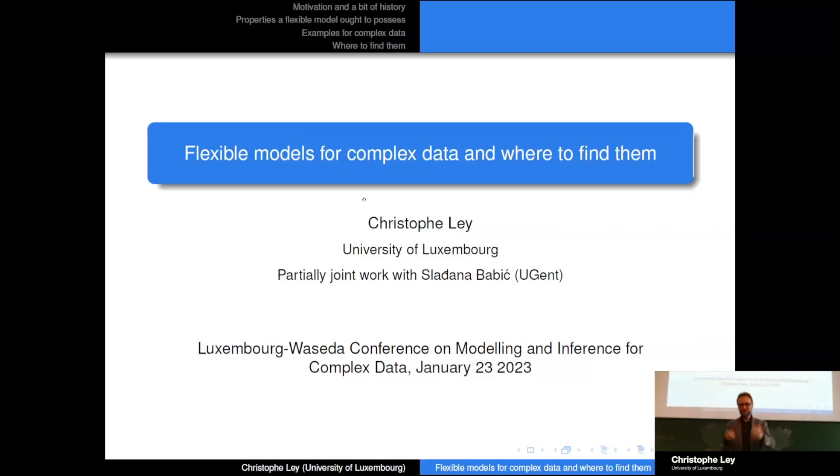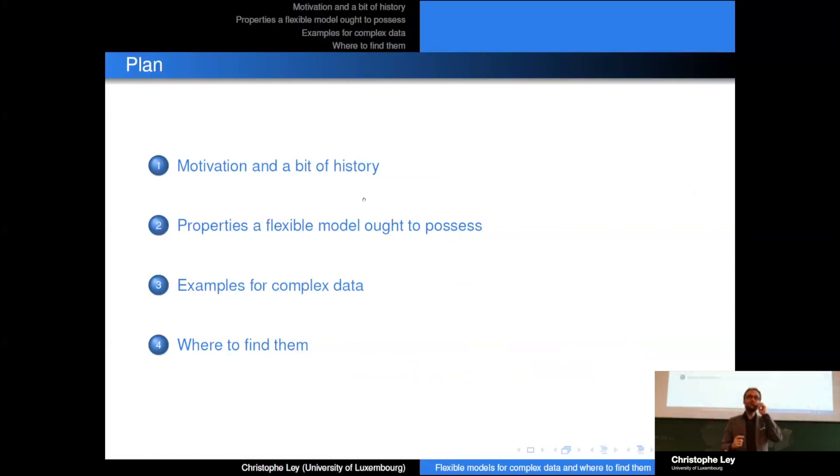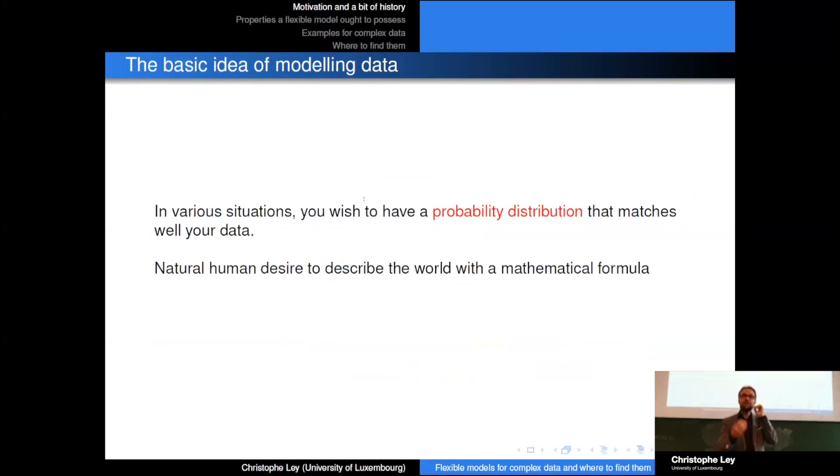My plan for today is first a little bit of motivation, then some history about modeling. Then I will say what, at least in my opinion and what I found in literature, are good properties that a flexible model should possess, will give very short examples, and then indicate you where to find them. So the basic idea of modeling data: in many situations you wish to have a probability distribution that actually matches well your data and allows you to describe your data. We have seen yesterday also very nice non-parametric methods, so this is an alternative. Non-parametric methods are very good if you want to make general inferential statements.